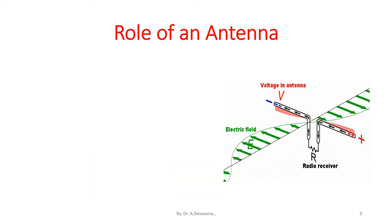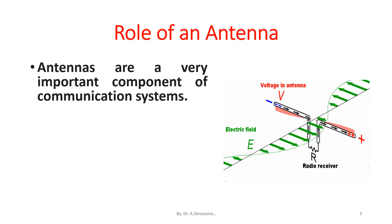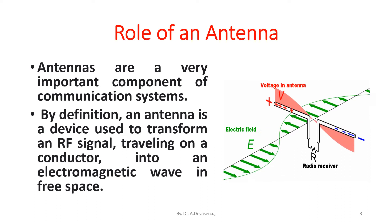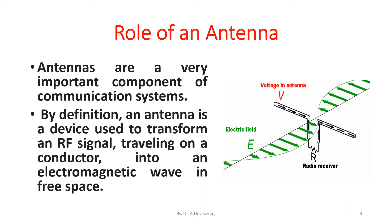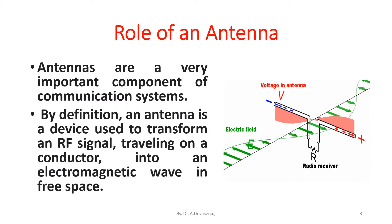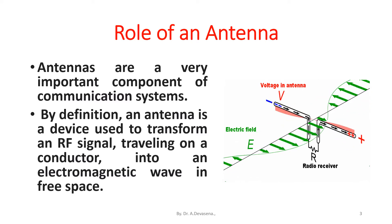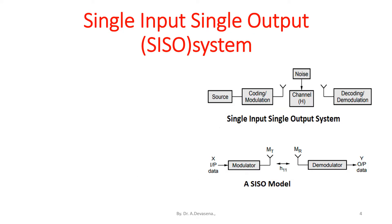Role of an antenna: Antennas are a very important component of communication systems. By definition, an antenna is a device used to transform an RF signal traveling on a conductor into an electromagnetic wave in free space. Single input, single output — SISO system.